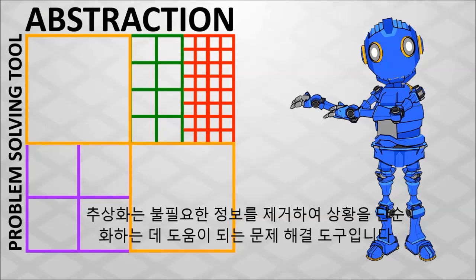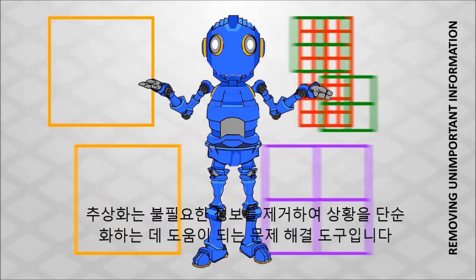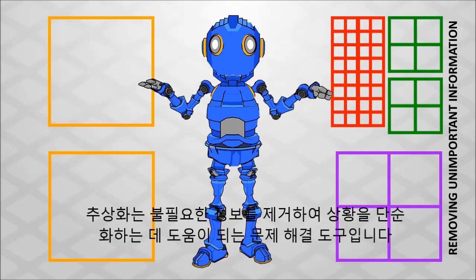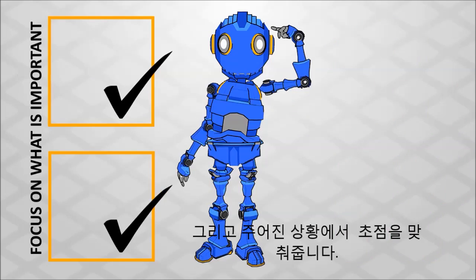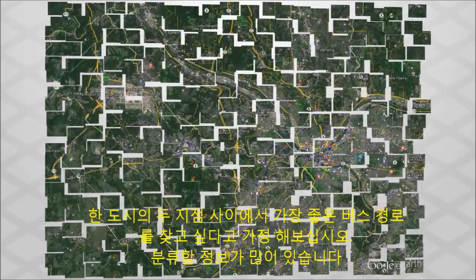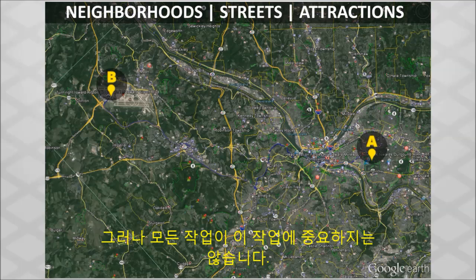Abstraction is a problem-solving tool that helps you to simplify a situation by removing unimportant information and focusing on what is truly important in a given situation. Suppose you want to find the best bus route between two points in a city. There is a lot of information to sort through. However, not all of it is important for this task.